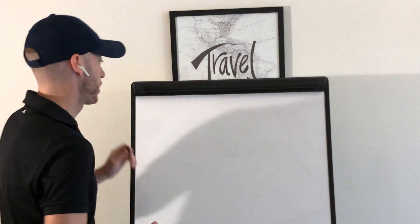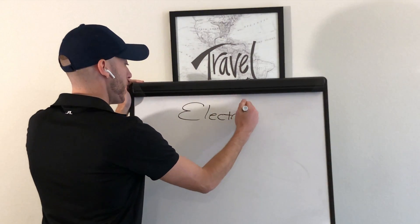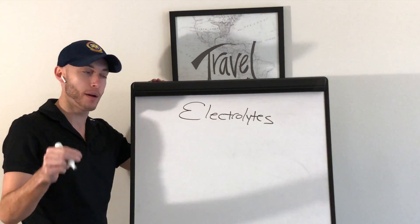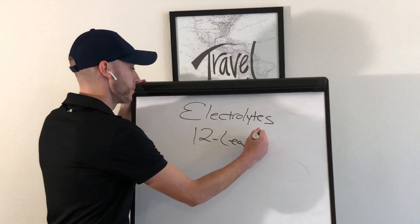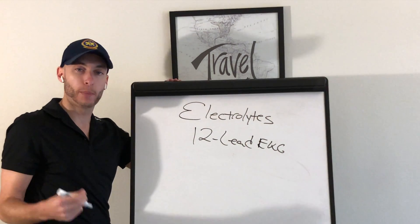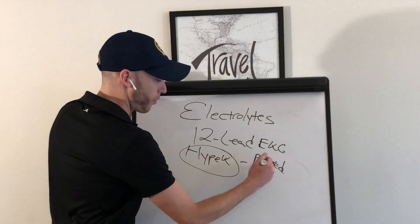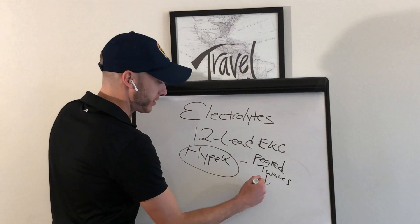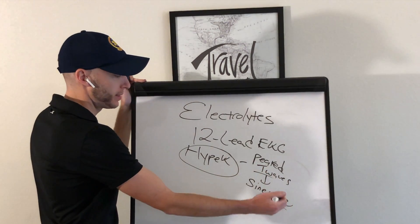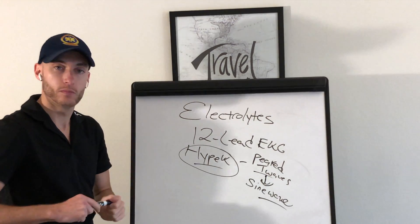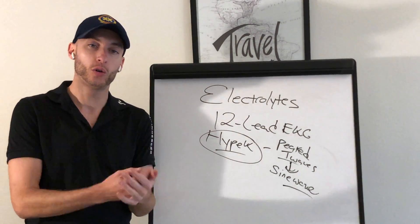What if the GCS-13 patient has completely normal vitals? Then we have one more step to check — electrolytes. How do we check electrolytes in EMS? Do a 12-lead EKG. The most common electrolyte problem we'll see is hyperkalemia. On a 12-lead, hyperkalemia starts with peaked T-waves and progresses to a funky sine wave appearance. Remember that pattern.